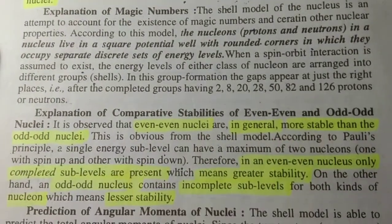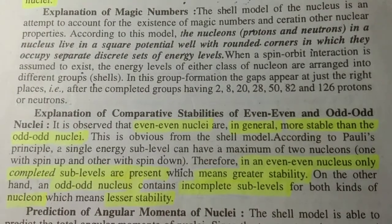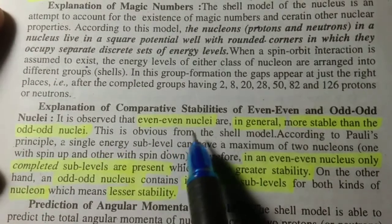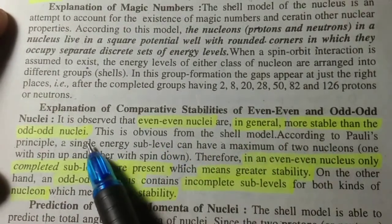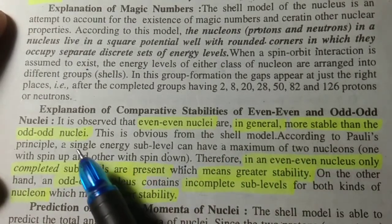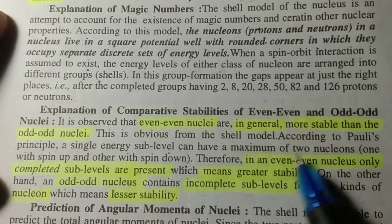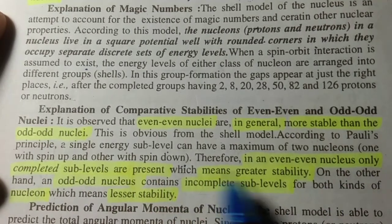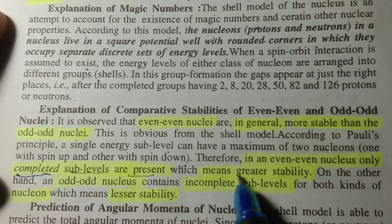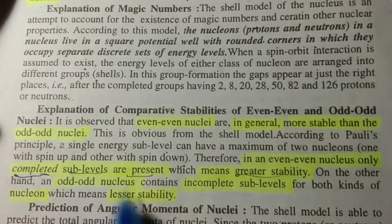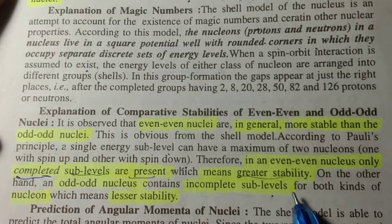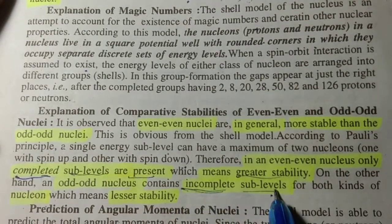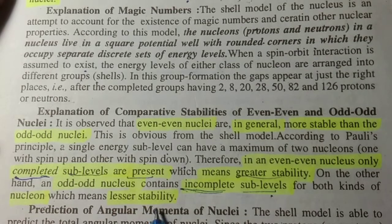Now, the explanation of comparative stability of even-even and odd-odd nuclei. Even-even nuclei are, in general, more stable than odd nuclei. This is obvious from the shell model. According to Pauli's principle, a single energy sub-level can have a maximum of two nucleons, one with spin up and the other with spin down. Therefore, in an even-even nucleus, only completed sub-levels are present, which means greater stability. On the other hand, an odd nucleus contains incomplete sub-levels for both kinds of nucleons, which means lesser stability.